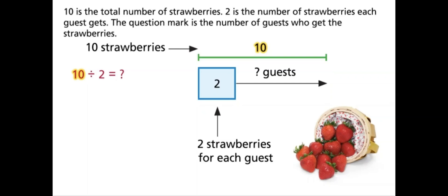Ten is the total number of strawberries. Two is the number of strawberries each guest gets. The question mark is the number of guests who get the strawberries.